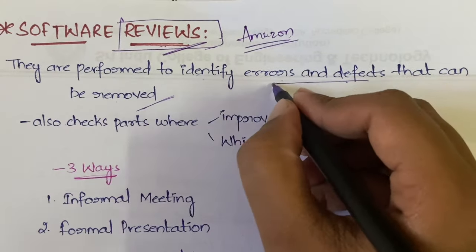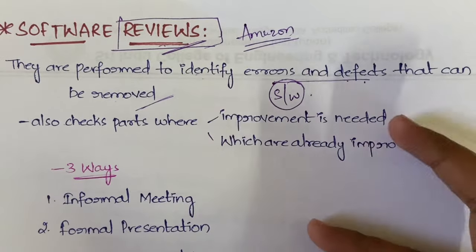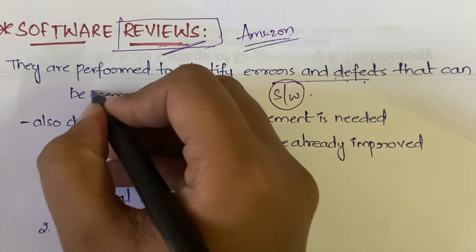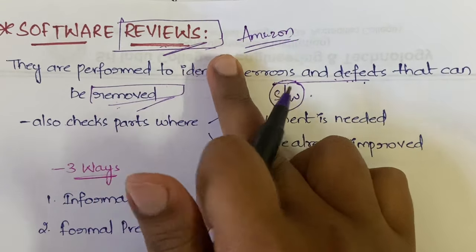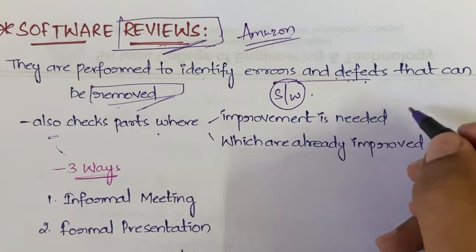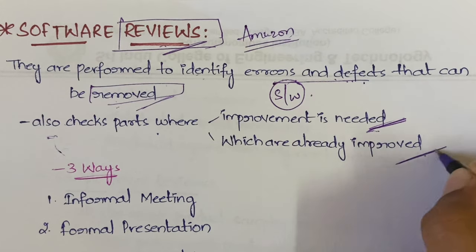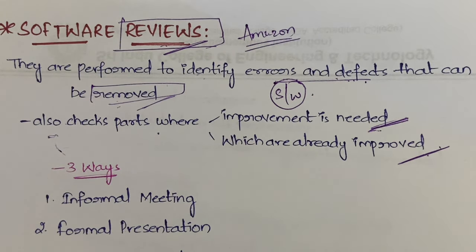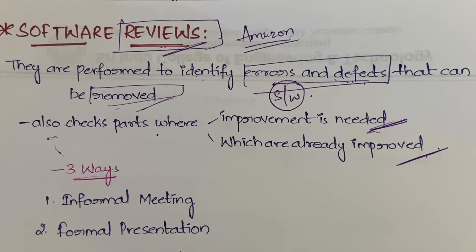If there is any error or defect in the software that you have produced, those defects or errors can be identified through software reviews. Along with identifying errors and defects, it will also check where improvement is needed — in which part of the software improvement is needed and in which part it is already done. We get clarity on where we have to improve and where we can relax. The main purpose of software reviews is to identify errors and defects.